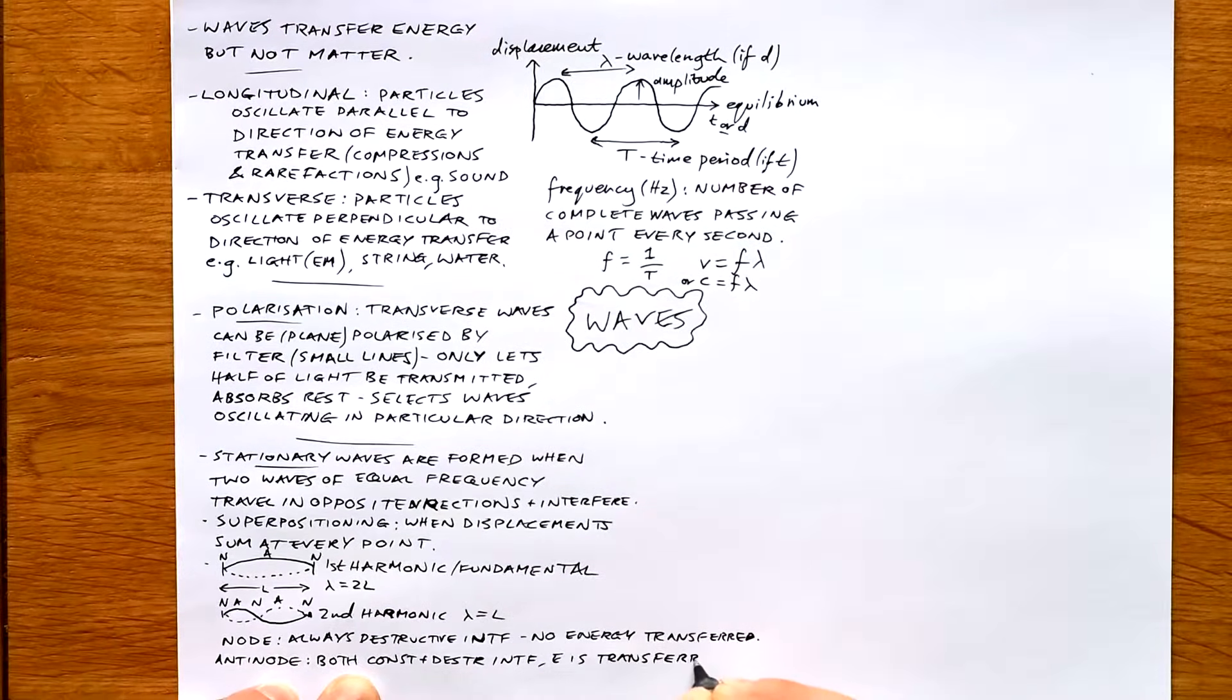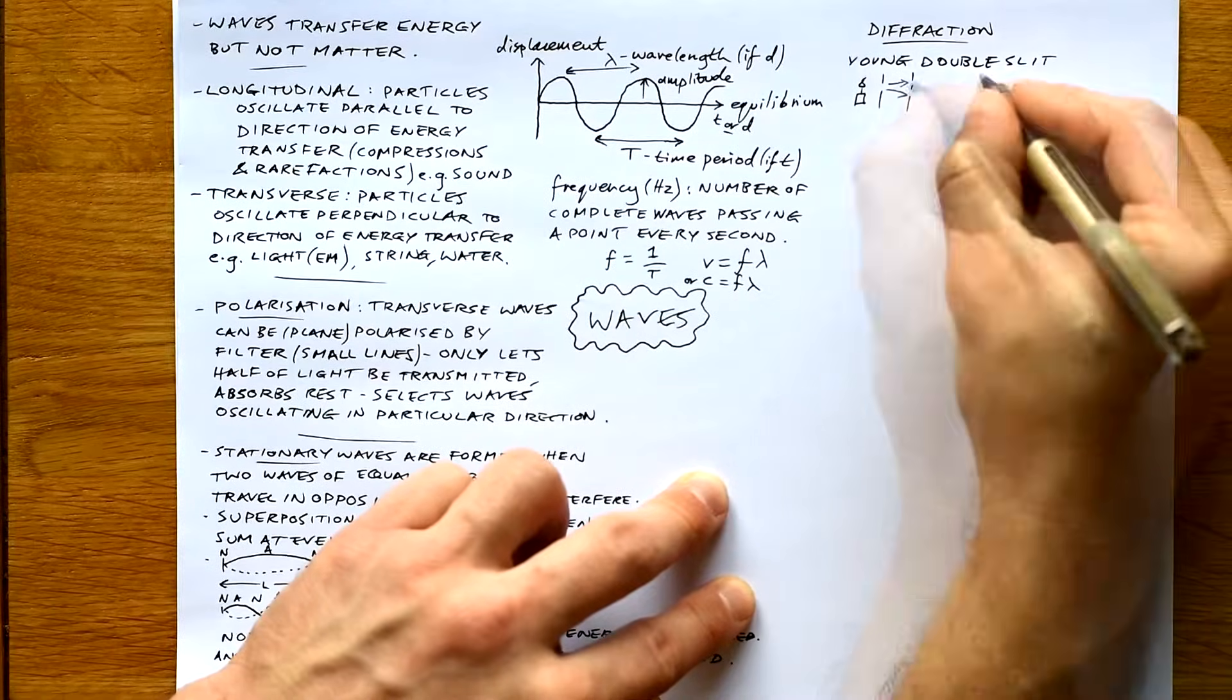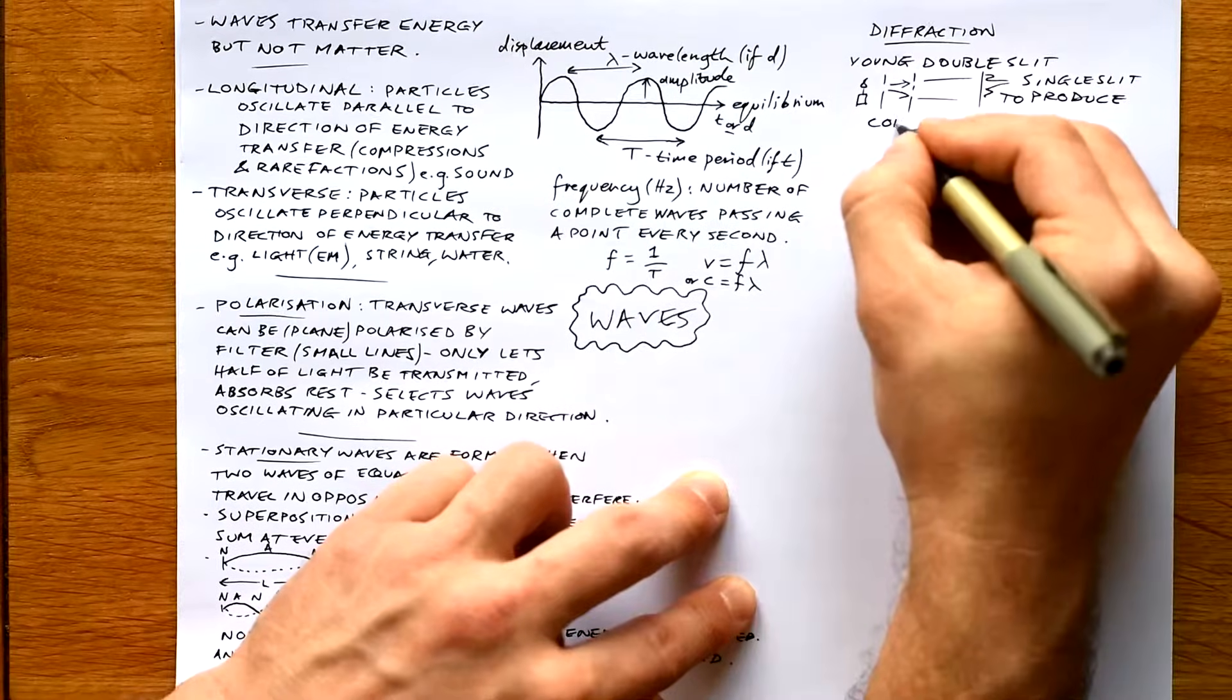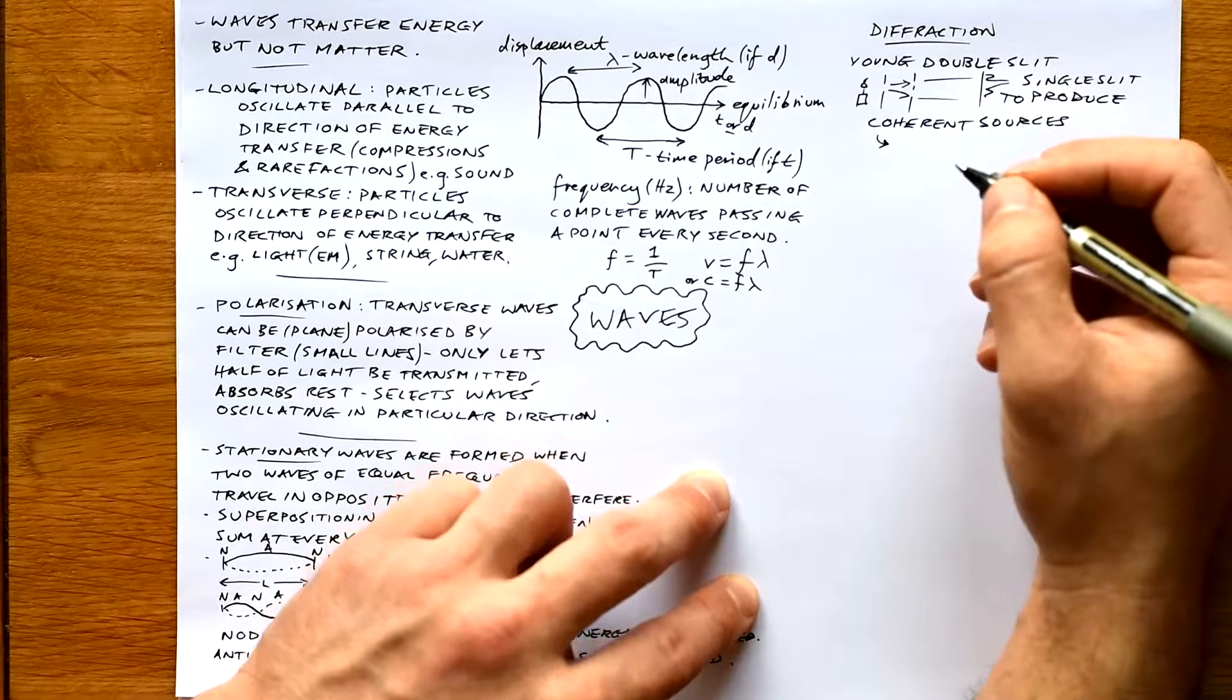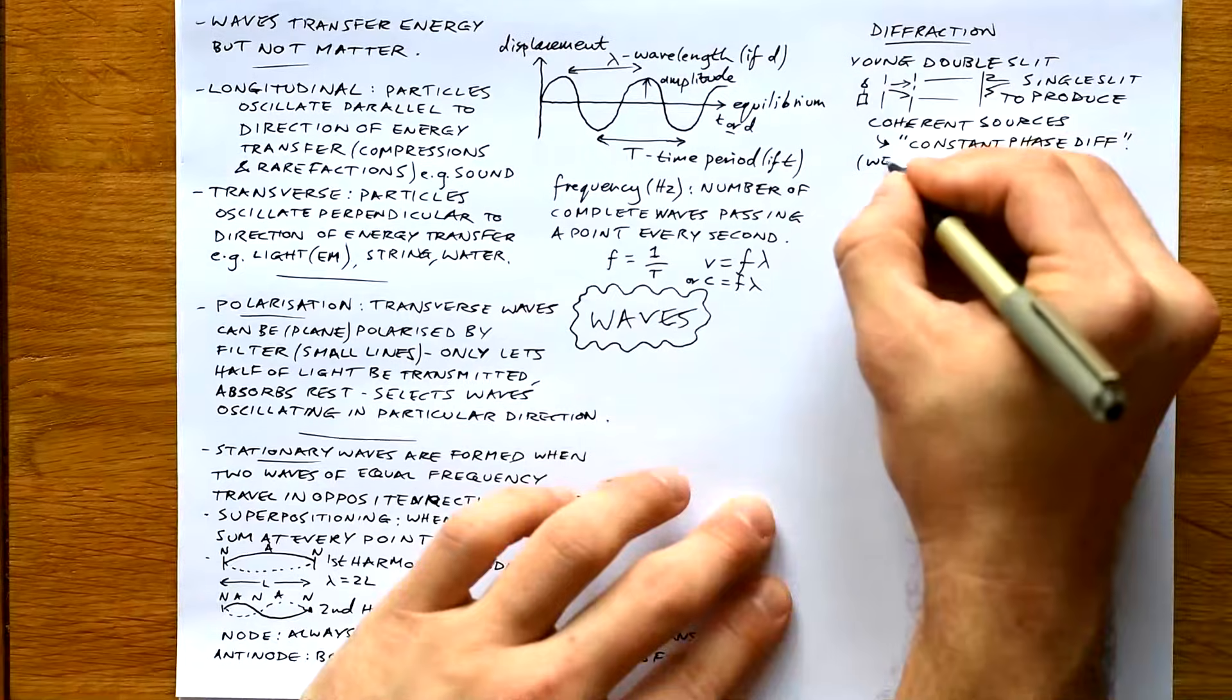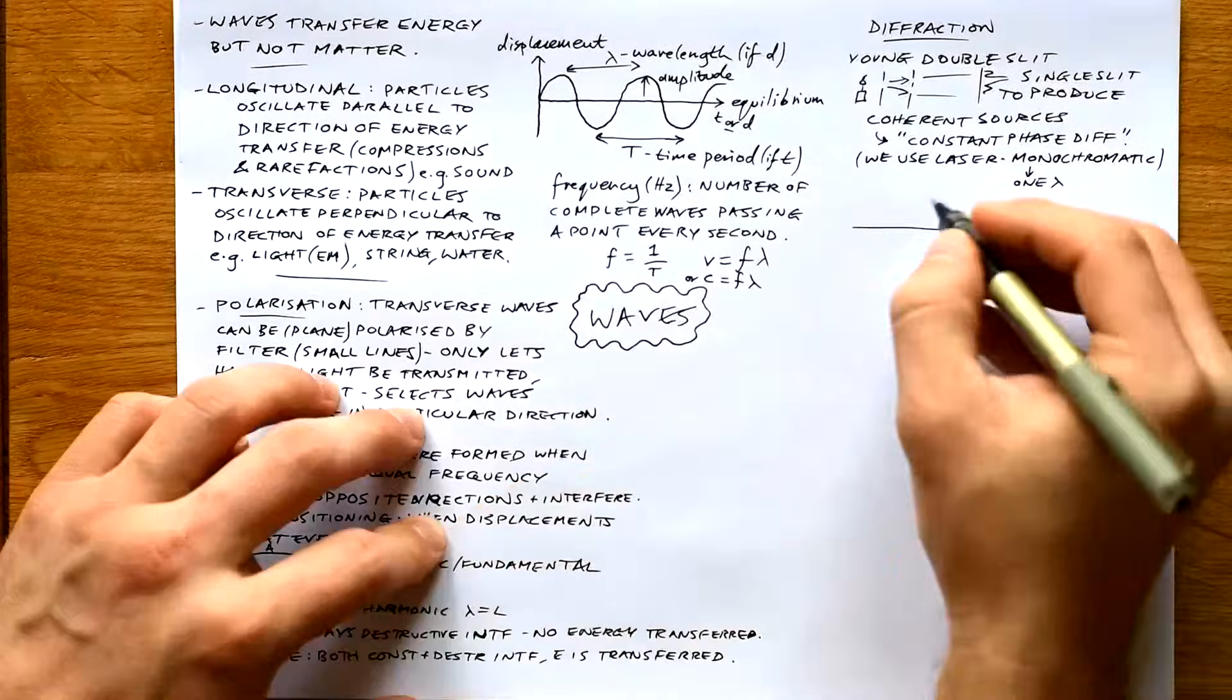Diffraction: Young's double slit. He had a candle and a single slit, and then a double slit which made the diffraction pattern. You needed the single slit to produce coherent sources at the double slit. Coherent - what does that mean? It means basically in sync, in phase, but the proper definition is waves that have a constant phase difference. We use a laser nowadays because that is coherent. It's also monochromatic whereas the candle wasn't, and that means just one wavelength.